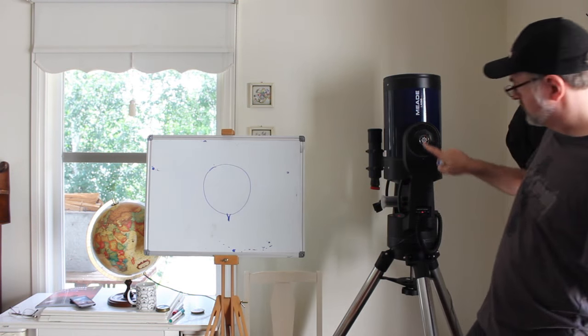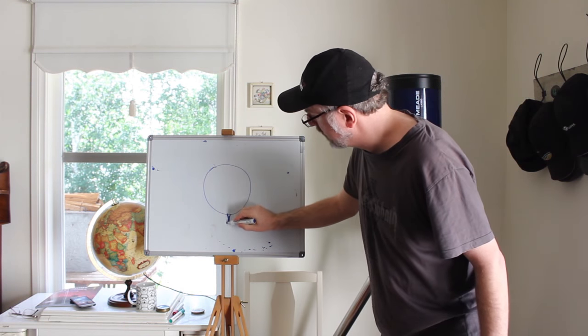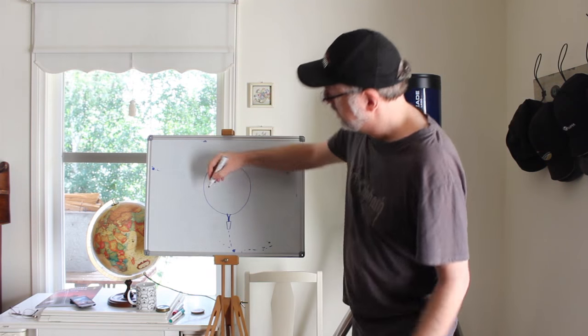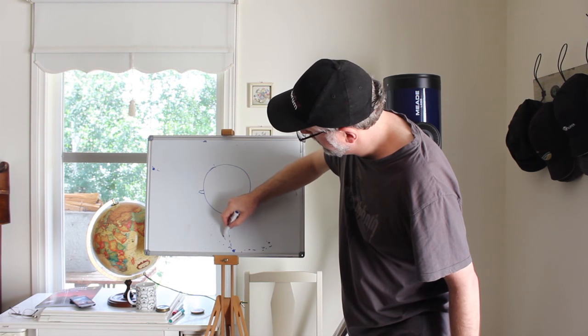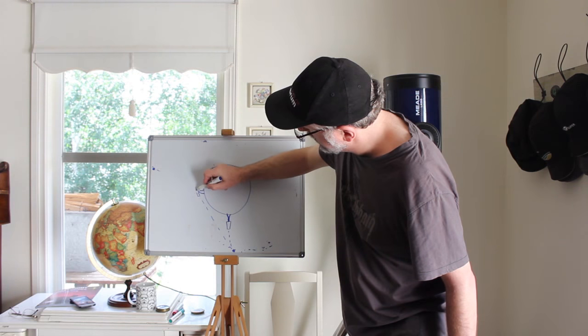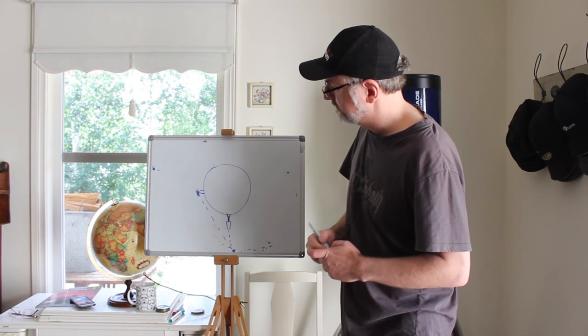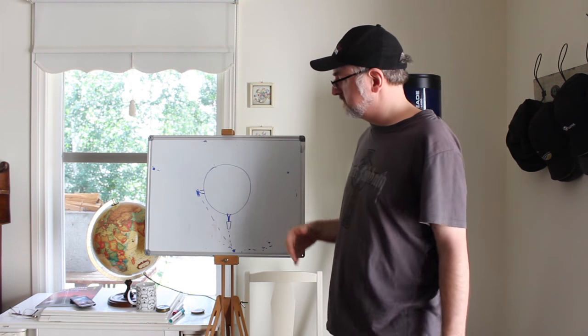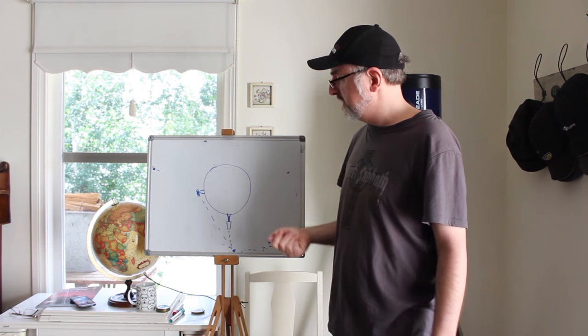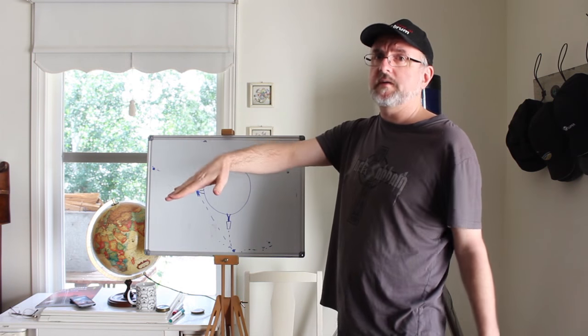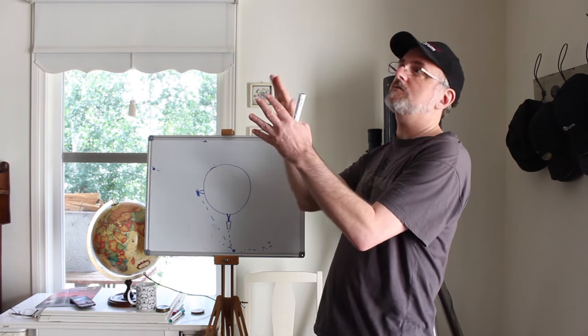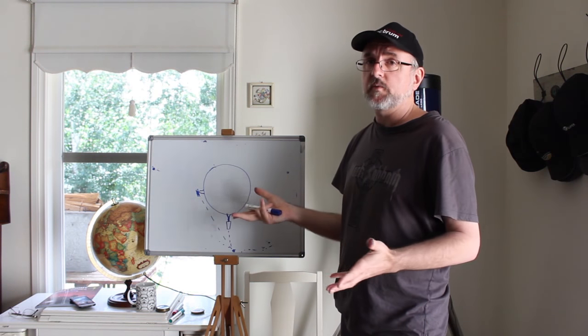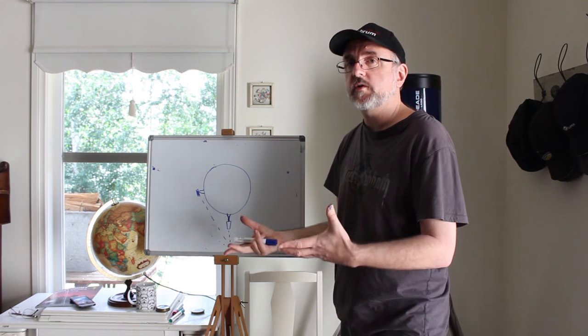If we're over here, it's going to be pointing at an angle. So if the Earth is shaped like a bowl, the further you go south, your telescope would actually be pointing down, because you're on an angle. So again, it doesn't make sense. And the math doesn't work either. There's no math that will work that way.